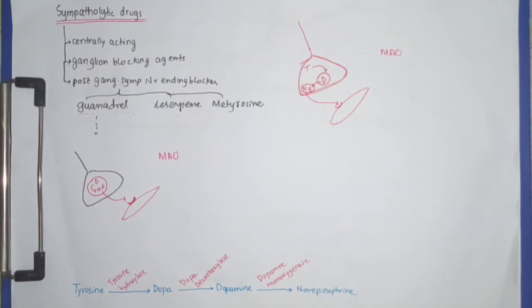outflow. But ganglion blocking agents nowadays are not used because they not only block sympathetic ganglia but also inhibit parasympathetic ganglia, which leads to generalized failure of the autonomic nervous system.